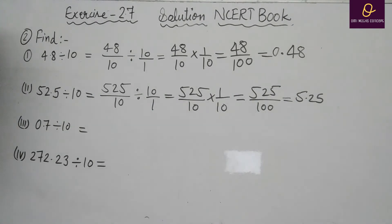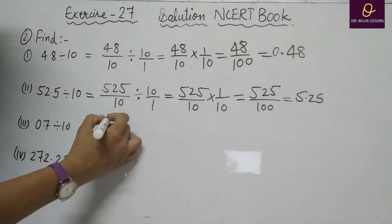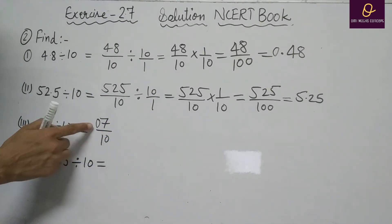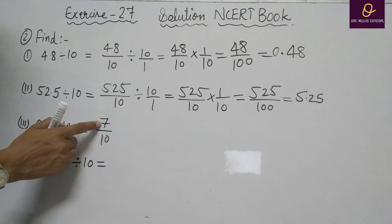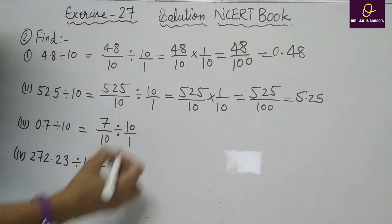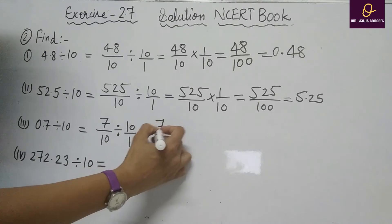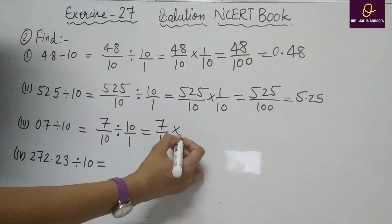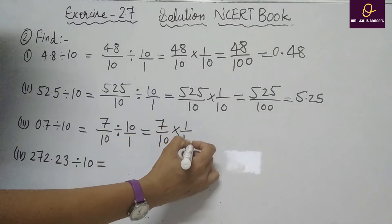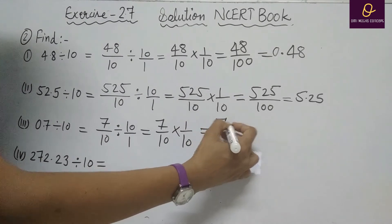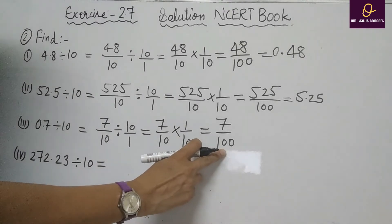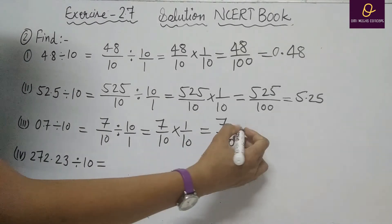Part C: 0.7 divided by 10. Remove decimal: 7 by 10. (The leading zero has no value so we write just 7 by 10.) Divided by 10 by 1. Divide changes to multiply and reciprocal of 10 by 1 is 1 by 10. Result: 7 by 100. Now put a decimal after 2 digits from the right-hand side.